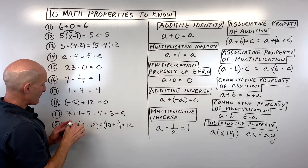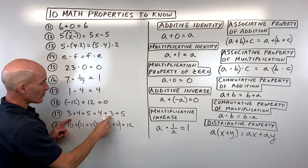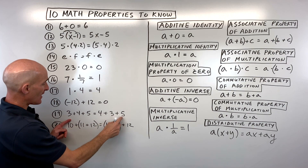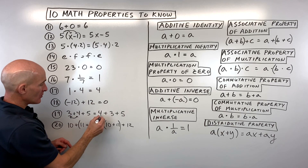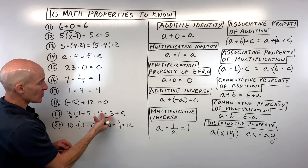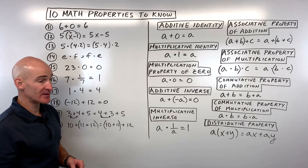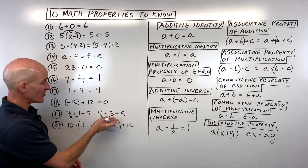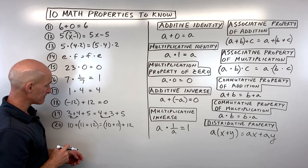For number 19: 3 + 4 + 5 equals 4 + 3 + 5. We changed the order of three and four — that's commuting, or the commutative property of addition since we're adding.